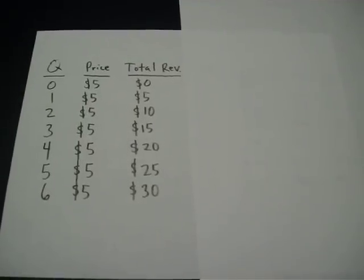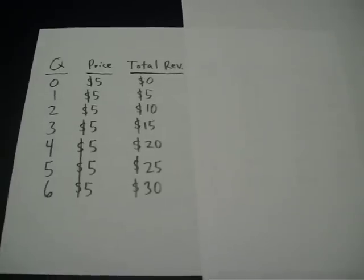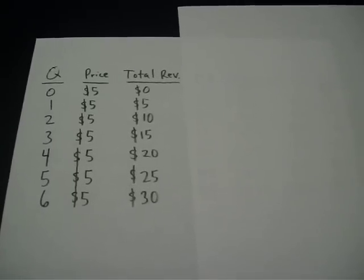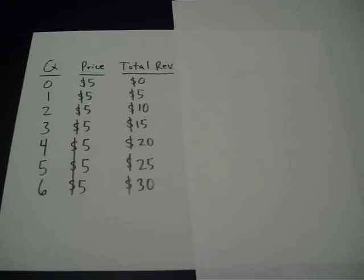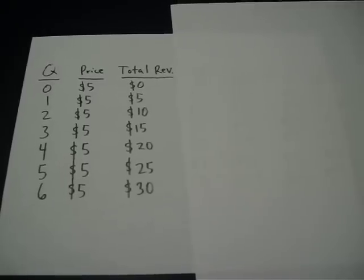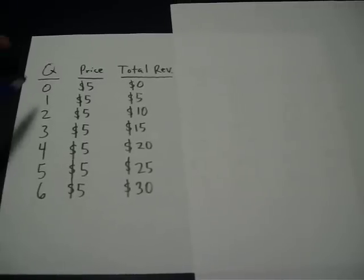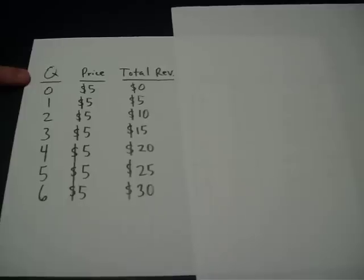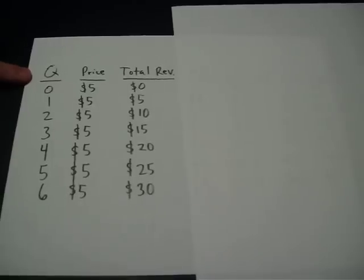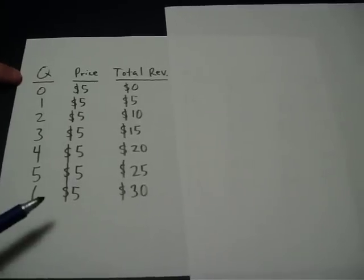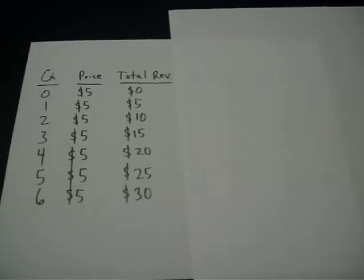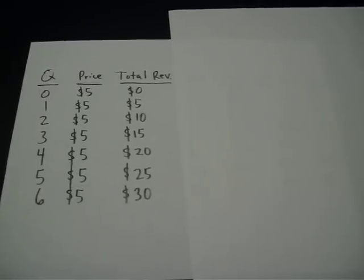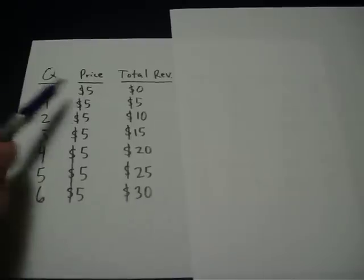One of the most important rules in all of economics is that you produce up to the point where marginal revenue equals marginal cost. So let's show why this works. I've got quantity that they're producing, I've got the price that's being charged — this must be a perfectly competitive market if this price is remaining constant — and then I've got total revenue. Total revenue is just the amount of money brought in, so it's just price times quantity.